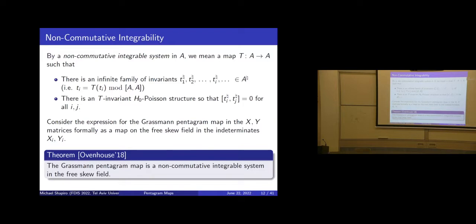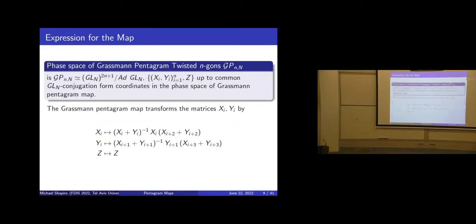By non-commutative integrable system in A, we mean a dynamical map in A such that there is an infinite family of invariants — elements in A♮ — with a T-invariant H₀-Poisson structure, such that the corresponding elements Poisson-commute with each other. For the pentagram map, we can define a non-commutative version by the same expression, thinking of x_i and y_i as elements of a skew field.